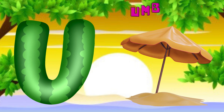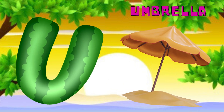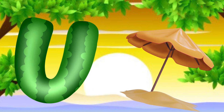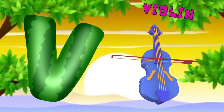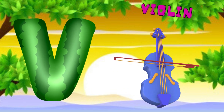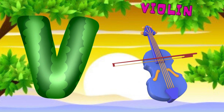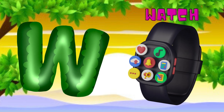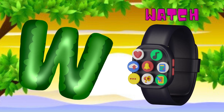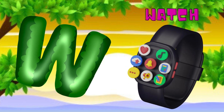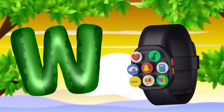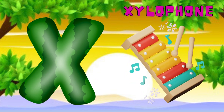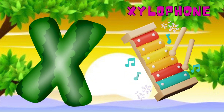U is for umbrella, u-u-u-umbrella. V is for violin, v-v-violin. W is for watch, w-w-watch. X is for xylophone, z-z-xylophone.